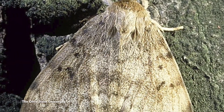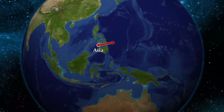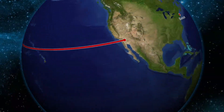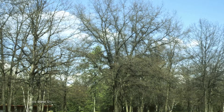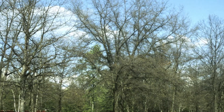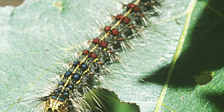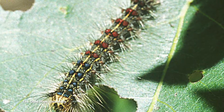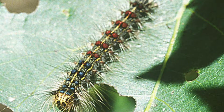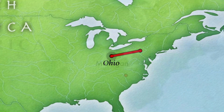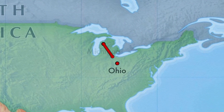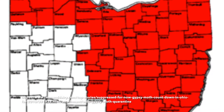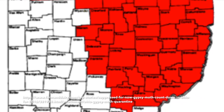Gypsy Moths are large, flightless moths that arrived in Boston, Massachusetts in 1889 from Asia, have since invaded many regions of North America, and have been recorded affecting large numbers of oaks and other tree species throughout their range. Gypsy Moths have colonized Ohio on two fronts, spreading from Pennsylvania in the east and from Michigan in the northwest. Today, Gypsy Moth can be found mostly in the northern and eastern counties of Ohio and is largely absent in southern Ohio.